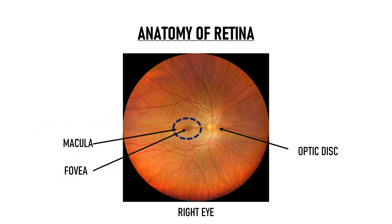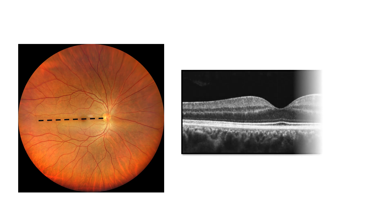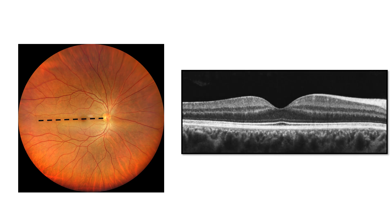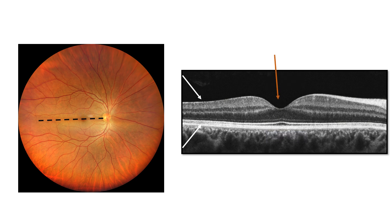If we see the same area of the retina on cross section, this is what it looks like. You can also appreciate the various layers of retina in this cross section. This is the inner side of the retina which is in contact with the vitreous. This dark area at the top of the image is the vitreous. And this is the outer side of the retina which is in contact with the choroid. This depression here corresponds to the fovea, and surrounding it is the macula.